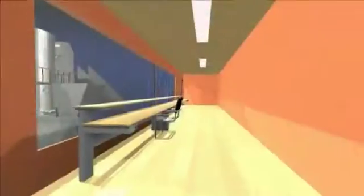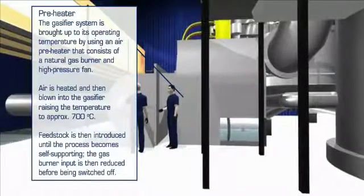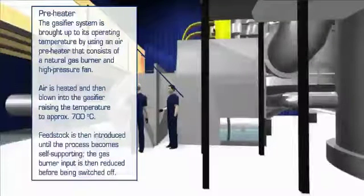Now for a more detailed tour of the plant. Starting in the control room, we move down to the factory floor. From cold, the gasifier system needs to be brought up to its operating temperature. This is accomplished using an air preheater that consists of a natural gas burner and high pressure fan.